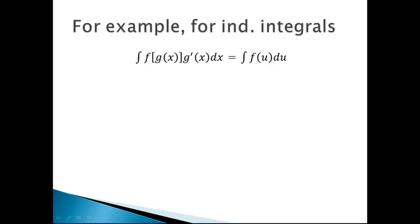g prime of x dx is basically the derivative of this little piece in there. So basically, if we substitute u for g of x, then we have du here. And so by putting it in the form of the integral of f of u du, we are able to integrate more simply than when it was in its complex form.